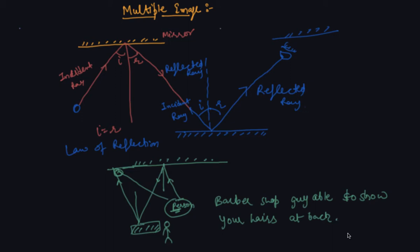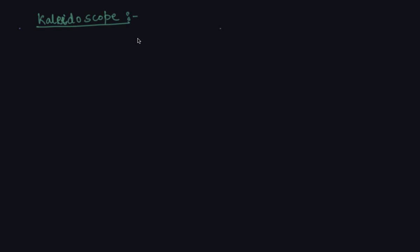I hope you are now pretty clear about how multiple images are formed when using more than one mirror. There is also one device called a kaleidoscope based on this principle of multiple images. Let me first erase all this. The main idea behind making a kaleidoscope is of multiple images.